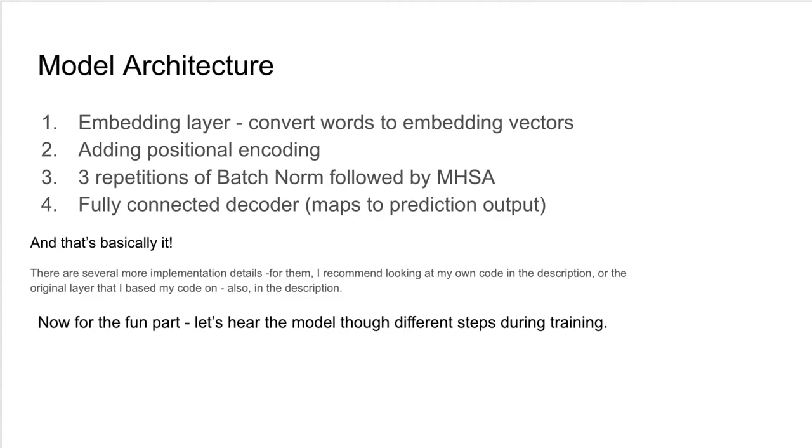The model architecture that I've used with my relatively limited computer power and time is an embedding layer that converts the word to an embedding vector, then adding a positional encoding, three repetitions of batch norm followed by multi-head self-attention with eight heads, each on a 30-element dimension size, and finally a fully connected decoder that just maps to the prediction output.